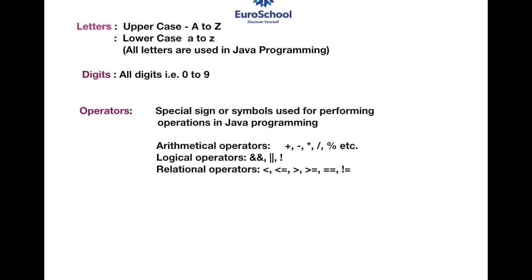The next is the relational operator: less than, less than or equal to, greater than, greater than or equal to, and double equal to — which checks whether both things are exactly the same. For example, two friends: you are both in ninth grade, both in A division — exactly the same, so it is true. Not equal to checks if the value is not equal, and the operation takes place. These are the relational operators.